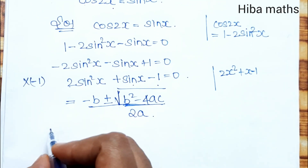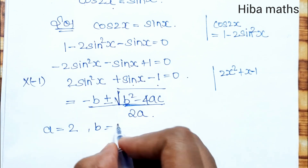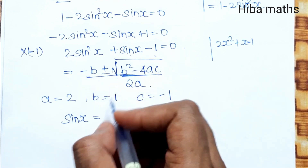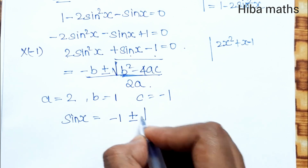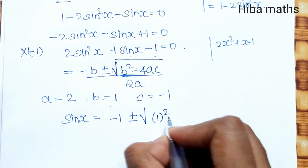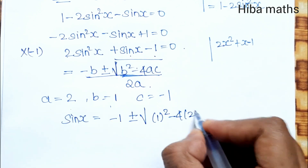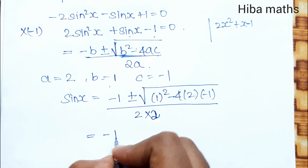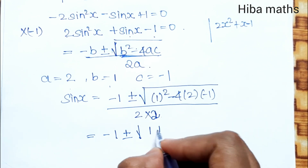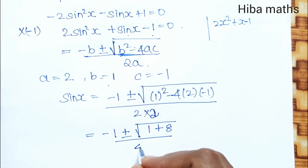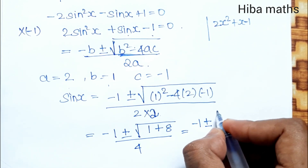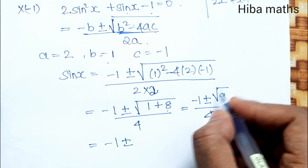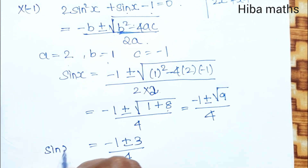So sinx equals minus b, where b value is 1, so: minus 1 plus or minus root of 1 squared minus 4 into a value 2, c value minus 1, divided by 2 into a value 2. That gives minus 1 plus or minus root of 1 plus 8, which is root of 9, divided by 4. Root of 9 is 3, so we get minus 1 plus or minus 3, divided by 4.